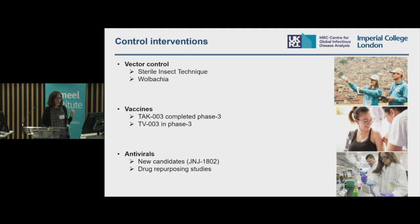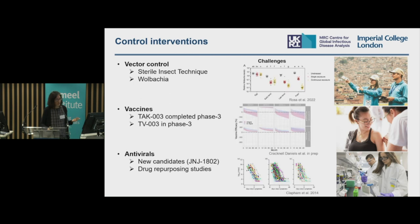There are also some challenges. Wolbachia has been shown to actually drop out where the climate and weather is too hot. These vaccines have a complex efficacy profile, which makes this intervention suitable in some places but not in others. And antivirals, despite being highly efficacious and showing some promise, have a very limited time window for use — given the acute nature of the infection, the viral load decreases very quickly.